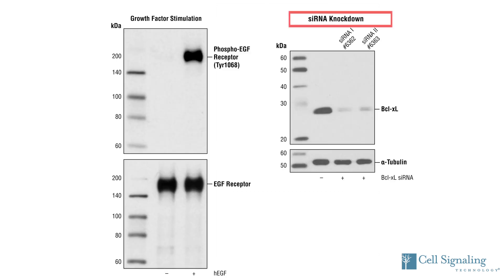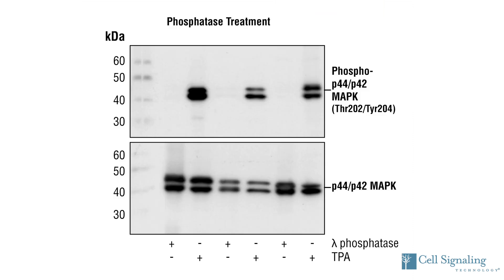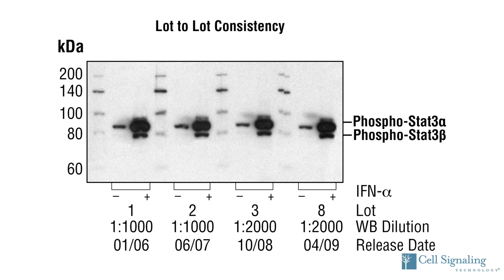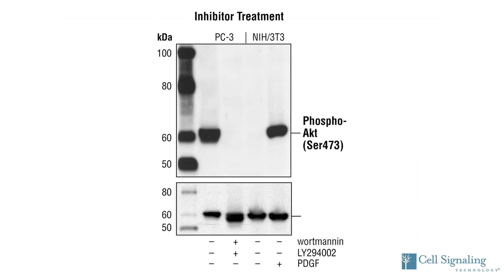Then, to verify whether bands can be induced or knocked down appropriately, we treat the cells with growth factors, chemical activators, chemical inhibitors, or siRNA to induce or inhibit expression. We also confirm phosphospecificity using phosphatase treatments that should eliminate all signals. Using all of these controls, we strive to supply the most specific and sensitive antibody possible for Western blotting, so you can be confident in your results and reproducibly generate publication-quality Western blots.